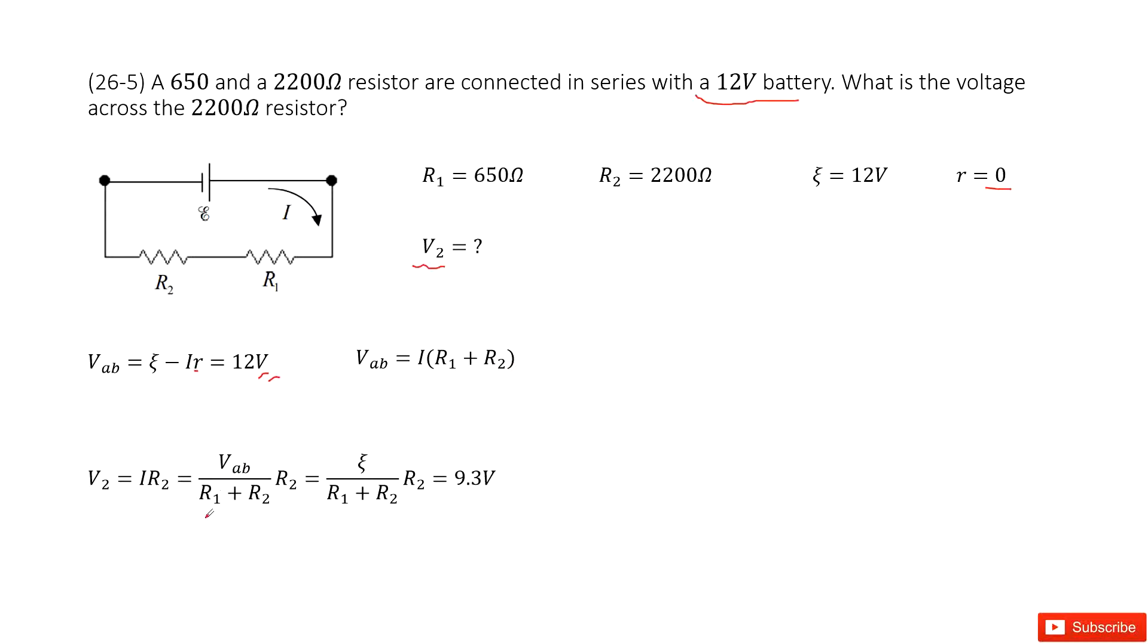So there, in this equation, we can see we want to find V2, that is, use current times R2. And this current can be replaced as VAB over R1 plus R2. And replace VAB as epsilon. And then we input all the given quantities to get the answer. Thank you.